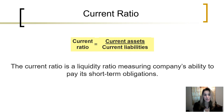All of which would be due sometime within the next year or the current operating cycle. Thus, a higher current ratio is better for a company's liquidity situation.